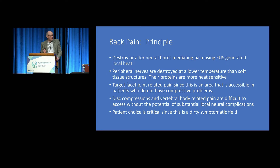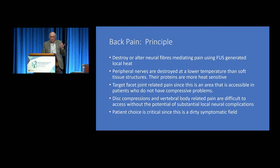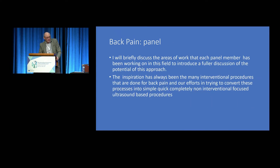It is worth remembering that peripheral nerves are destroyed at a lower temperature than soft tissue structures. For those doing focused ultrasound around the body: beware of neural damage, because it is very easy to do. The target we go for in facet joint pain is one of the more controversial aspects, but it is accessible for focused ultrasound, whereas other causes of back pain such as disc compressions and vertebral body issues are really tough to access with conventional focused ultrasound.